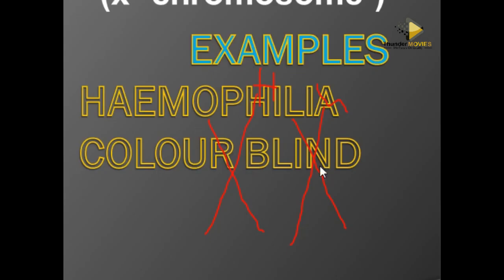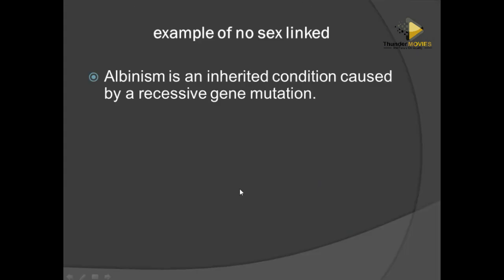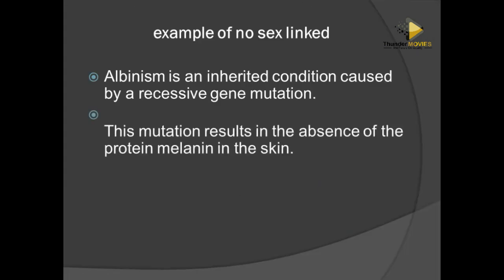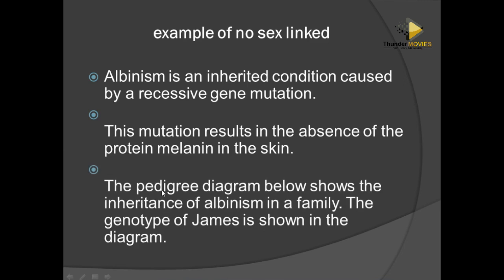Examples of sex-linked genes include hemophilia and colorblindness. Examples of non-sex-linked characters include albinism, which is caused by a recessive allele not carried on the X chromosome. In albinism, the individual loses their skin color — the only difference is they don't have the gene that causes darkness of skin color.